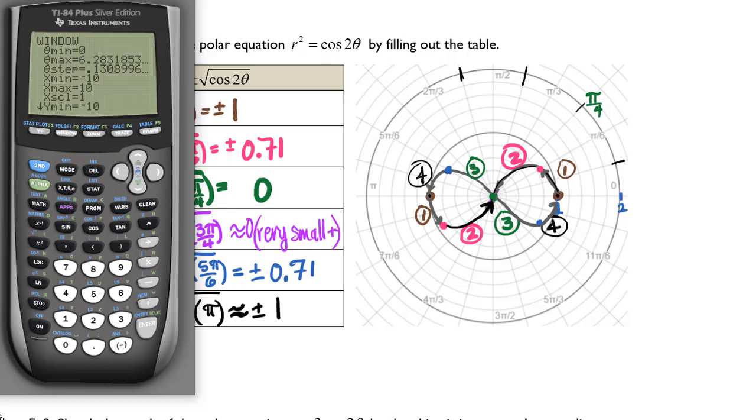Now we have a theta min, a theta max, a theta step, and then an x min, an x max, and a y scale.